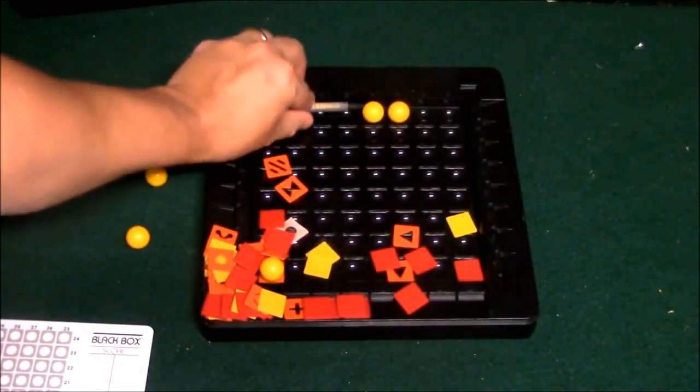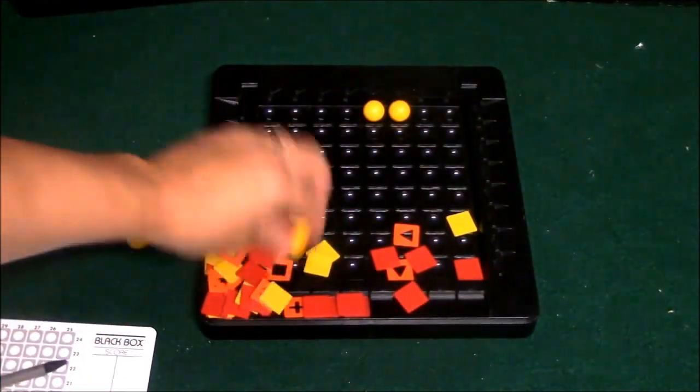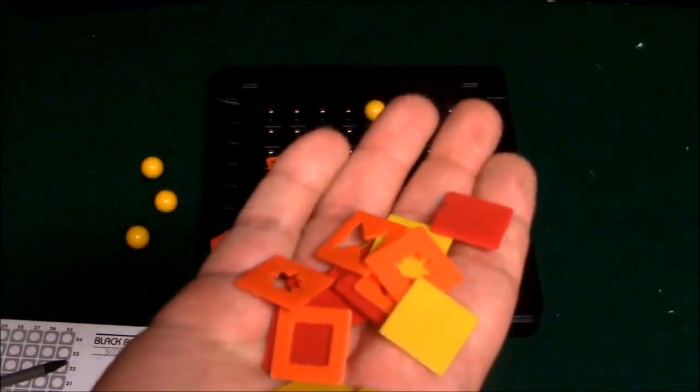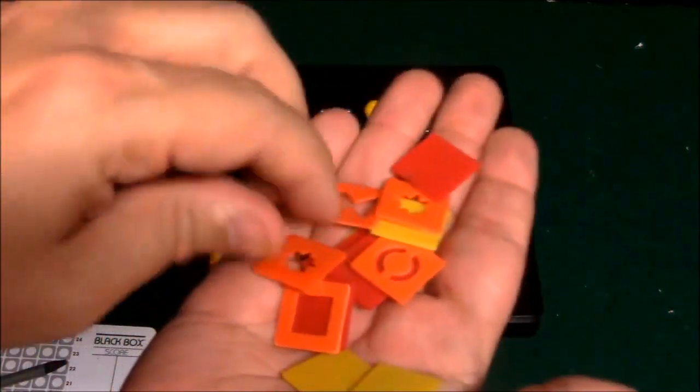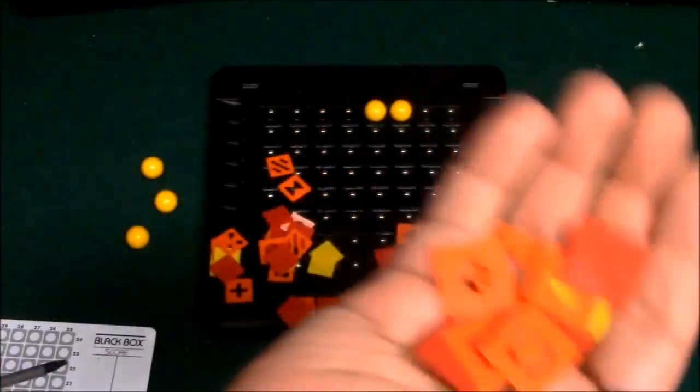These of course are your marbles. There's five of these. You have a little Crayola thing that you're going to be using to mark on the pad. And then these here are your what we call rays or whatever. These different colors and these different symbols mean different things and I'll explain to you what they mean here in just a little minute.